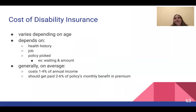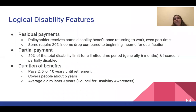The cost of disability insurance varies depending on your age, health history, the job you have, and the policy you've picked. On average, it costs one to four percent of your annual income, and you should get paid two to six percent of the policy's monthly benefit in premium. Some disability features worth noting: residual payments allow the policyholder to receive some disability benefit even after returning to work, even if only part-time — some require a 20% income drop to qualify. Partial payments cover 50% of the total disability limit for a limited time period, generally six months, for someone who is partially disabled.